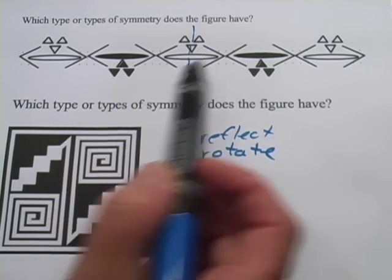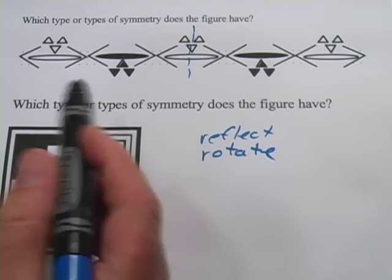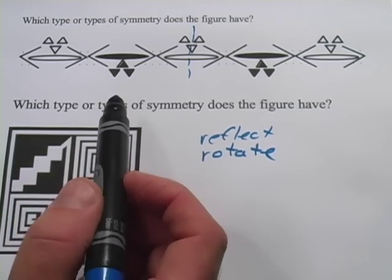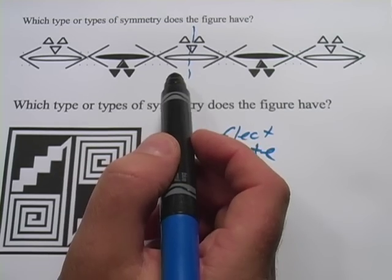These eyes are going to match up with these eyes. These eyes are going to match up with these eyes. Or triangles, I guess. They look like people to me, so I'm calling them eyes. So this has reflection or reflectional symmetry.